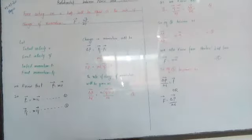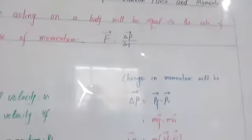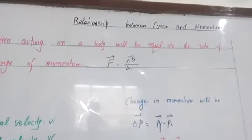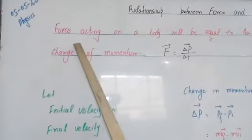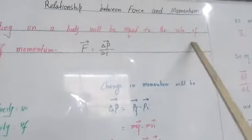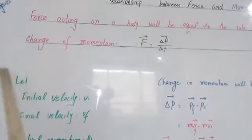Open your books and see what is momentum. आज हमने जो पढ़ना है वह है relationship between force and momentum. तो momentum जैसे मैंने आपको बताया है, the quantity of motion in an object is known as momentum, और इसे P से represent करते हैं। यह एक vector quantity है। Force acting on a body will be equal to the rate of change of momentum — इसको हम force कहते हैं।